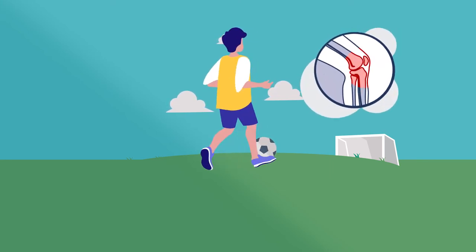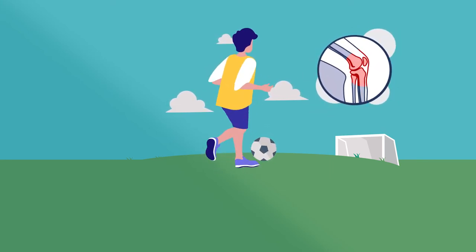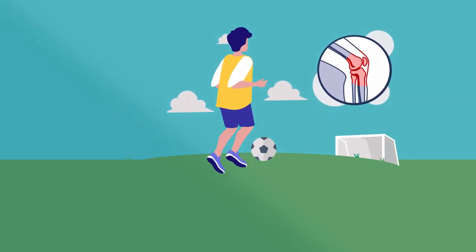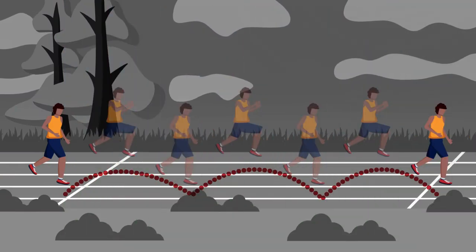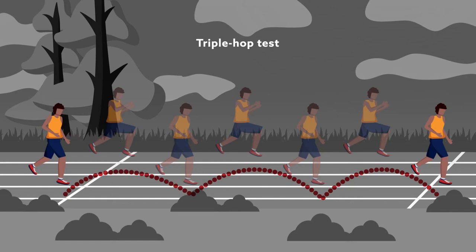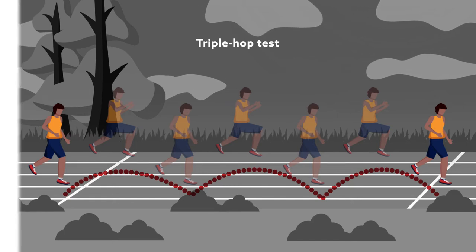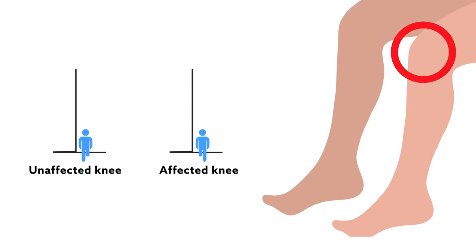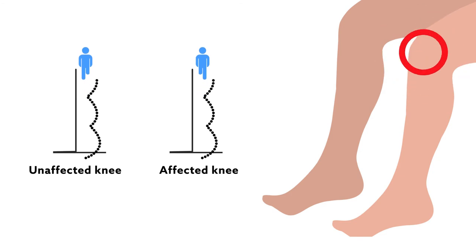That has motivated some researchers to take a closer look at some of the measures used to declare athletes ready to resume their previous level of activity. One group recently examined the triple hop test for distance. Their findings, reported in the American Journal of Sports Medicine, suggest that comparing hop distances between the affected and non-affected knee could mask serious differences in biomechanics.